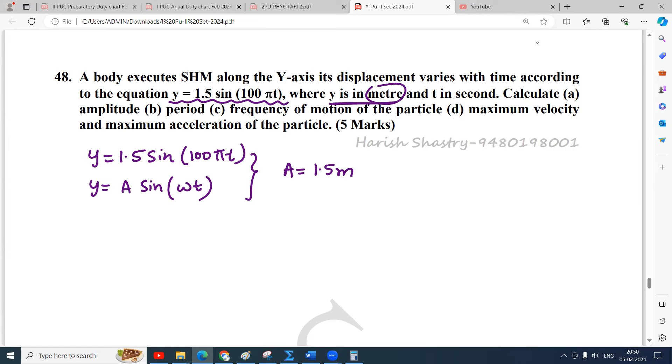What is omega? In the place of omega we have 100 pi, so omega is 100 into 3.14. That comes to 314 radians per second.